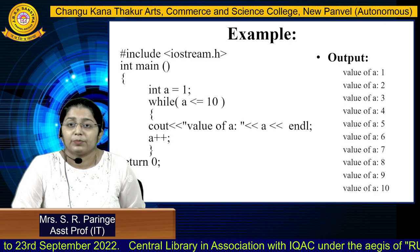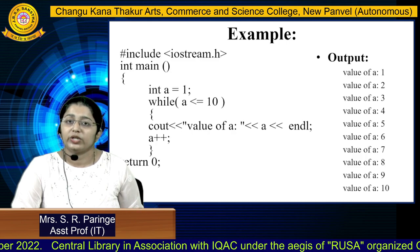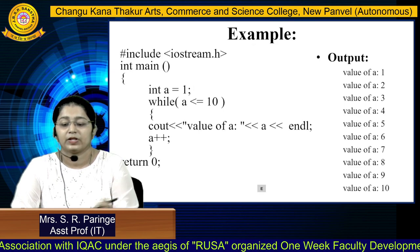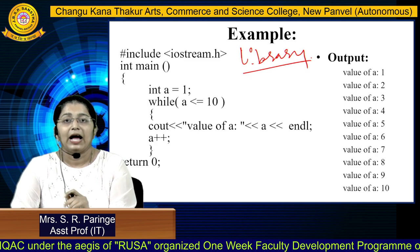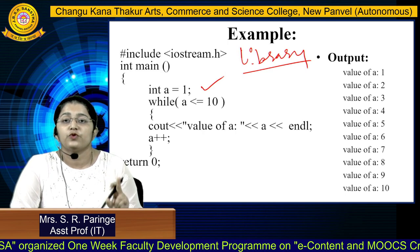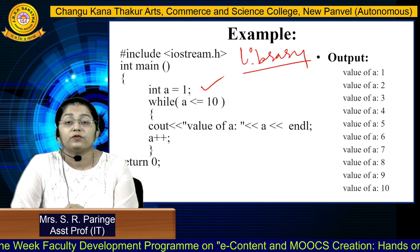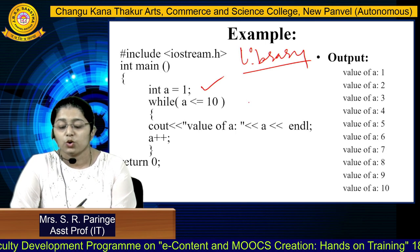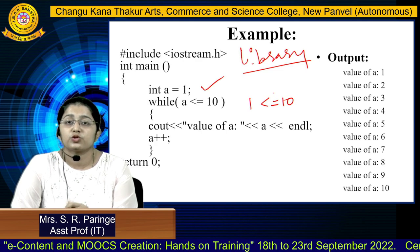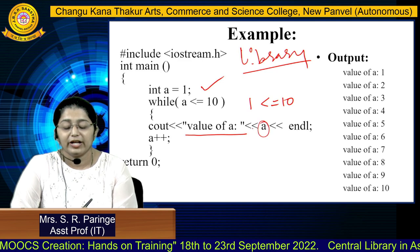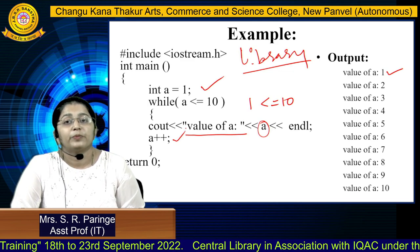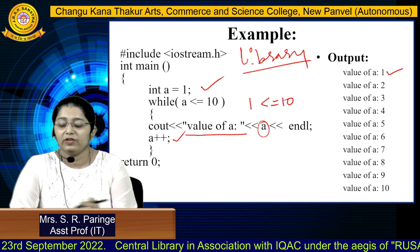Now we will see an example for the while loop — printing numbers from 1 to 10. Here we have the required library and in the main function we have declared one variable with an initial value of 1. We write the condition: while a is less than or equal to 10. Since 1 is less than or equal to 10, this condition is true. So the value of a, which is 1, gets printed.